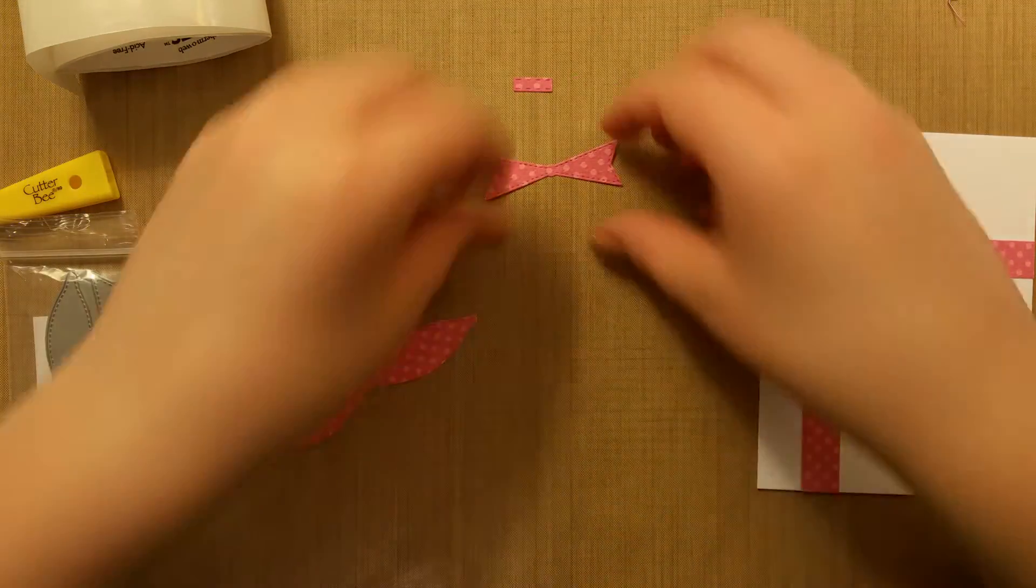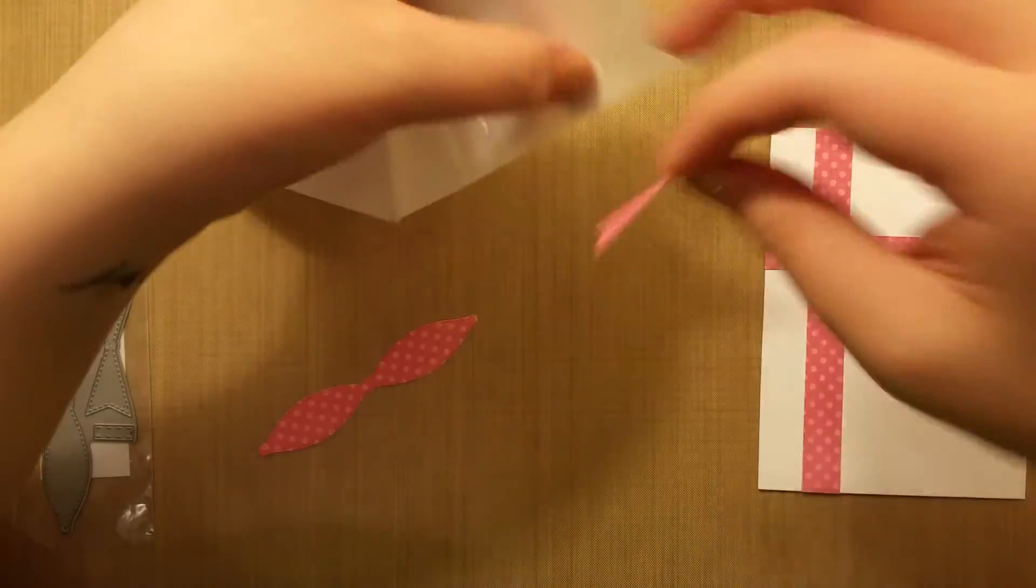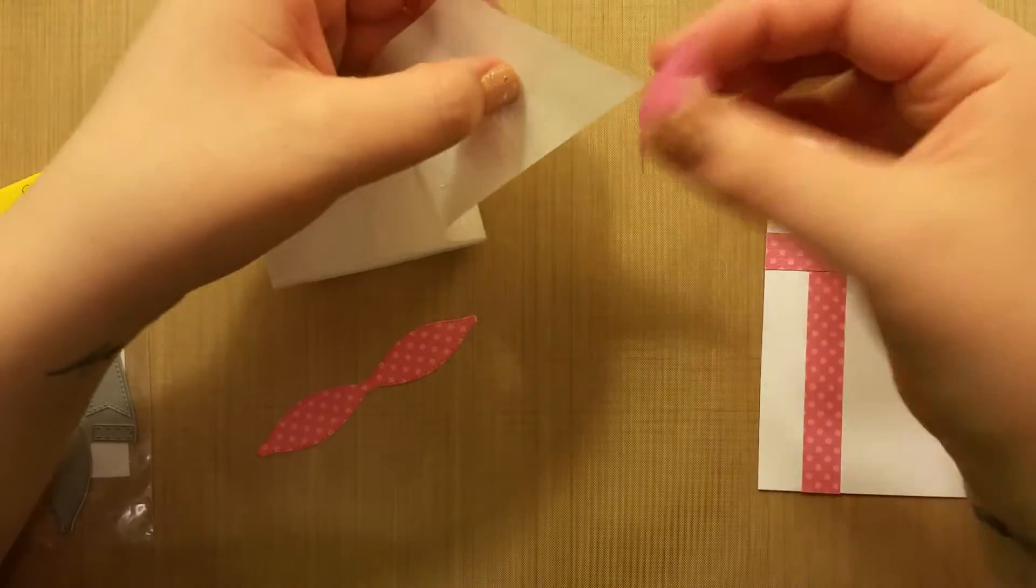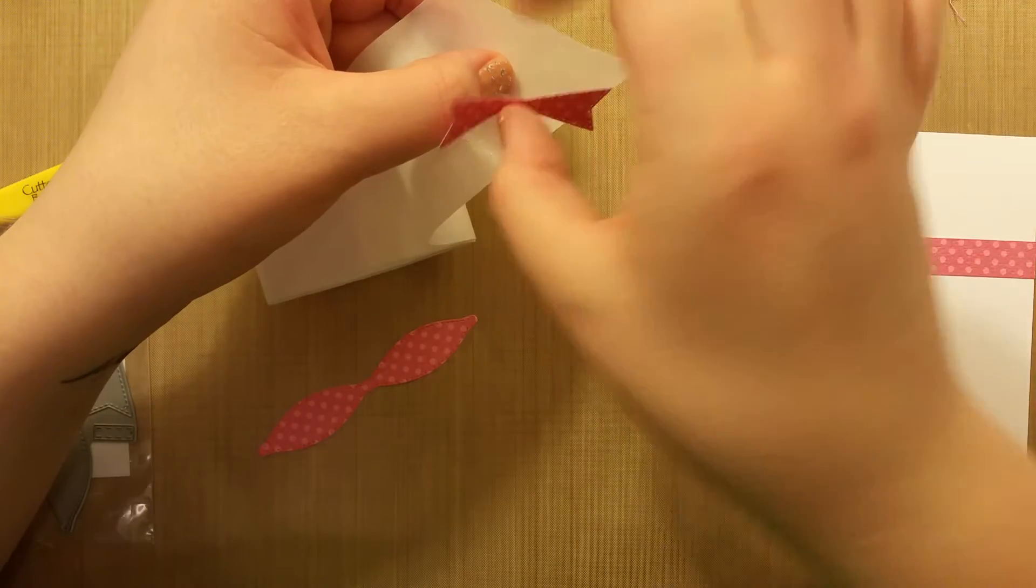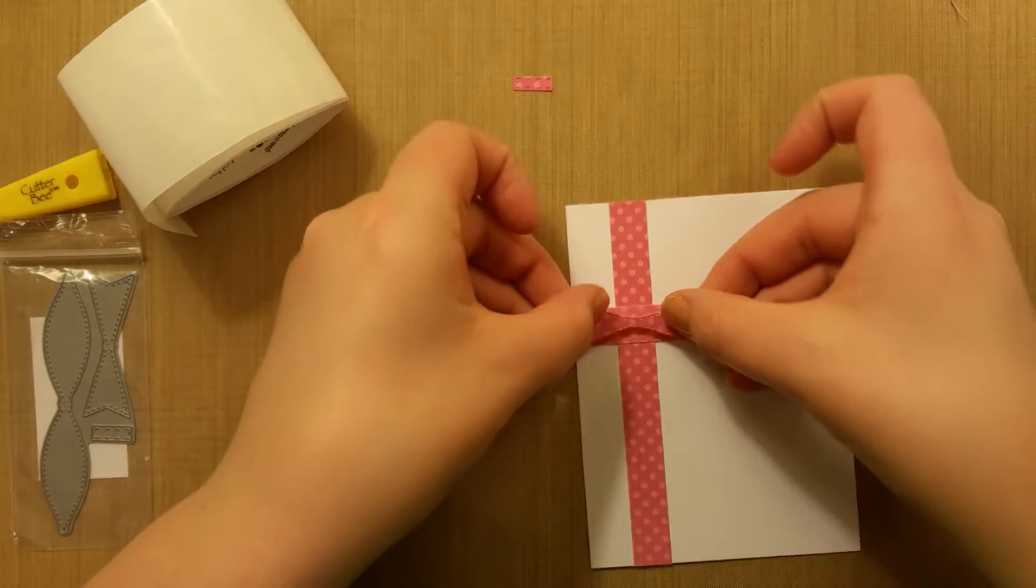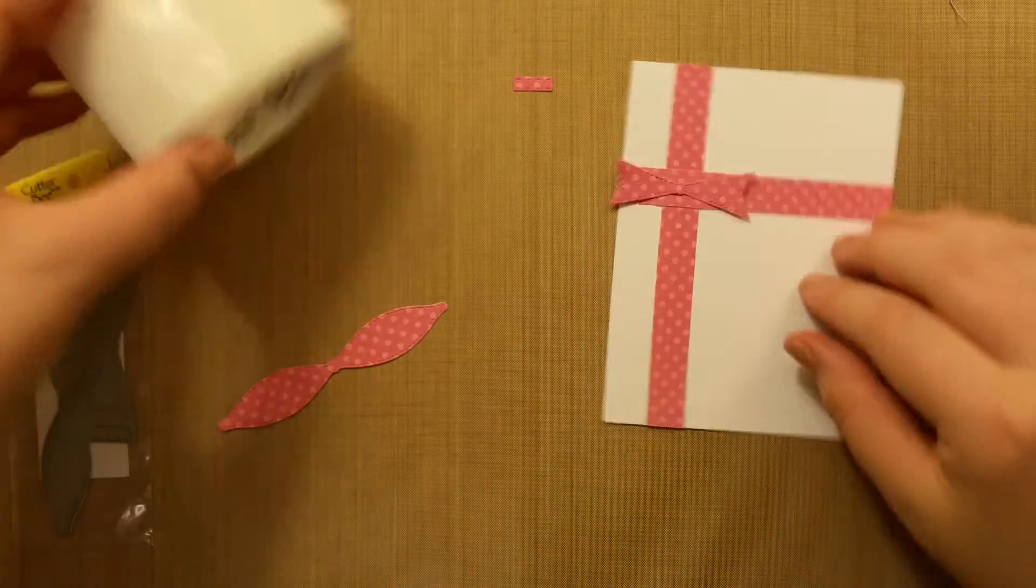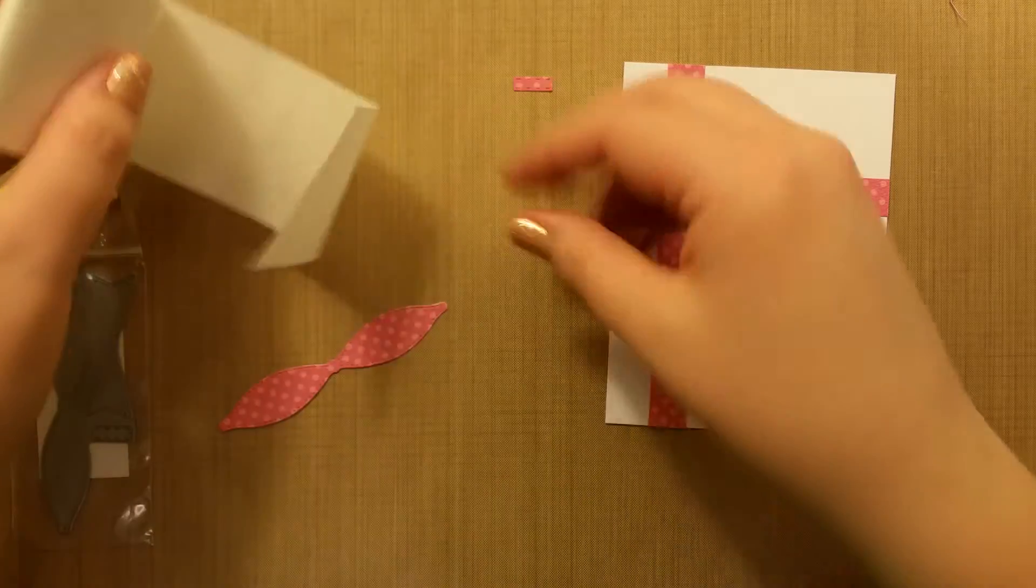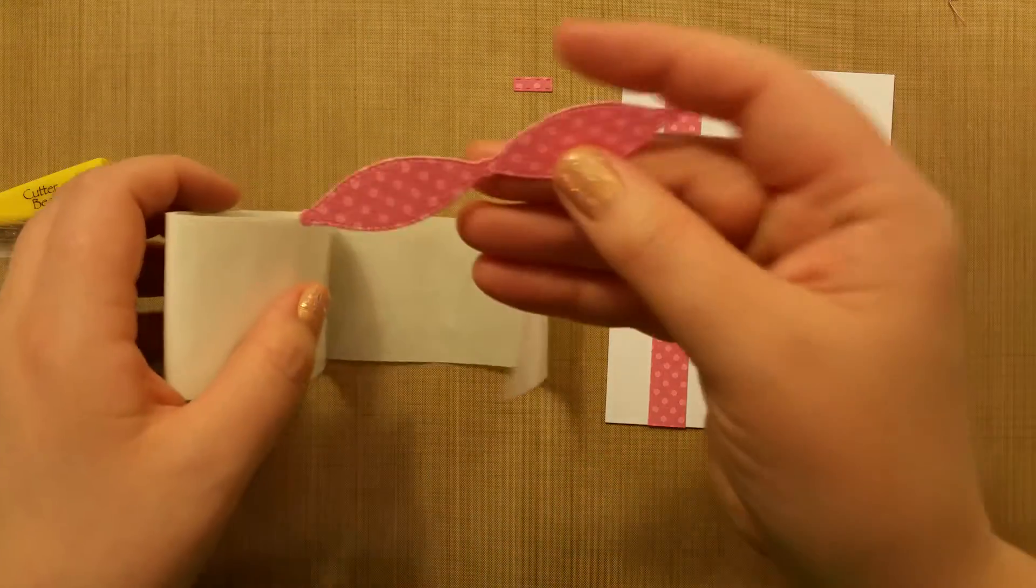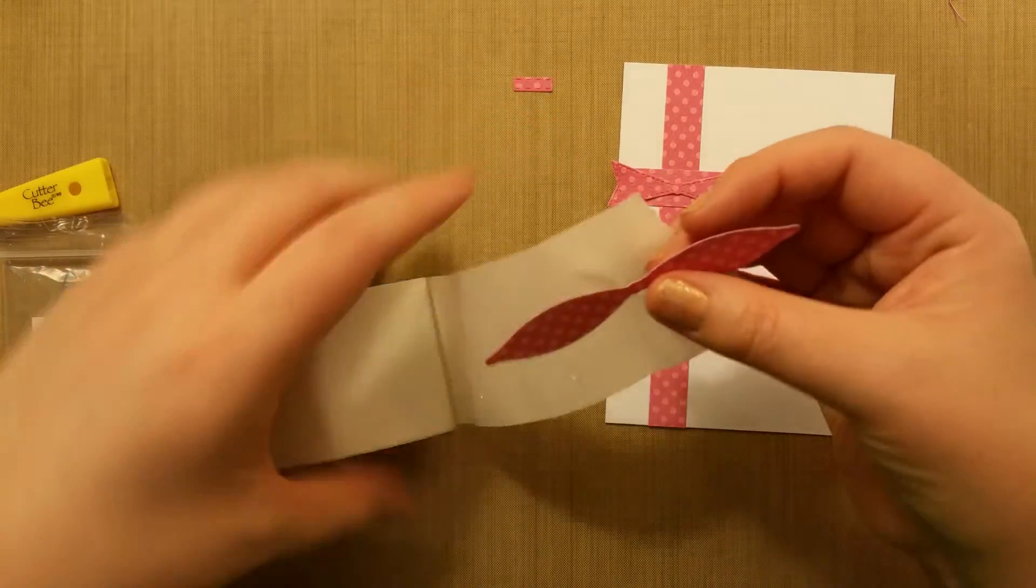The first thing we want to do is actually stick down the back of the bow, so I'm going to pick up a glue dot right in the middle. This is how I use them, I just stick the paper to that and pick it up. I don't use my fingers because it tends to get very sticky, and you don't want to have to fight these things off of your fingers.